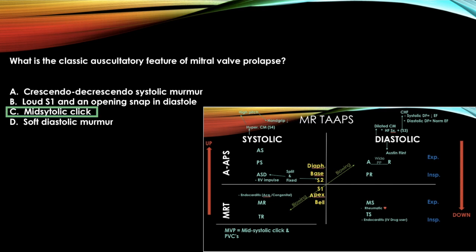The next question has a mid-systolic click — pretty easy. Find mitral valve prolapse on the chart and mid-systolic click is the answer.